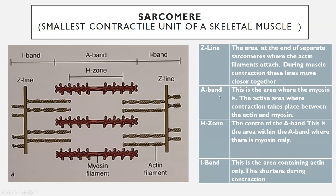Here's a summary table: Z-line — the area at the end of separate sarcomeres where actin filaments attach; during muscle contraction these lines move closer together. A-band — the active area where contraction takes place between actin and myosin. H-zone — the centre of the A-band, the area within the A-band where there is myosin only. I-band — the area containing actin only. In an exam, you'll likely get a labelling question for these zones and bands, and for the sliding filament theory itself you mainly need to mention actin, myosin, and the Z-lines.